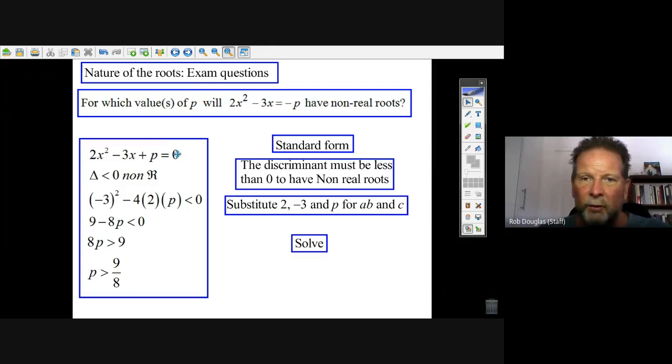Now the nature of roots, when they say non-real, real, when they're asking about roots and they describe rational or anything like that, then you need to look at the discriminant, which is b squared minus 4ac.